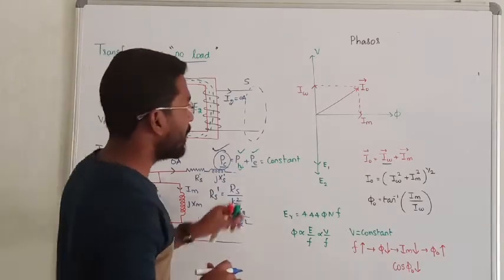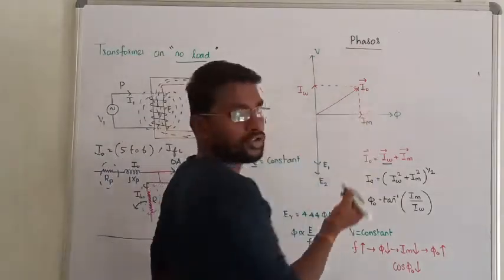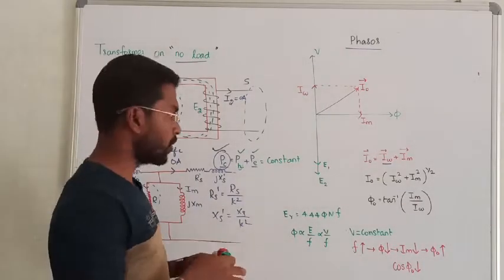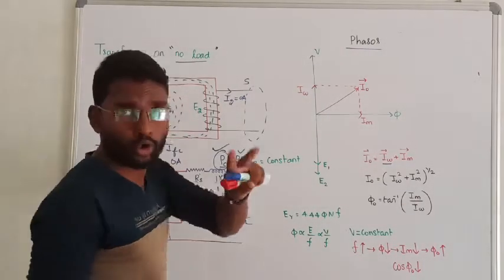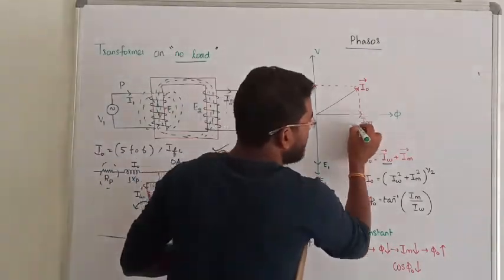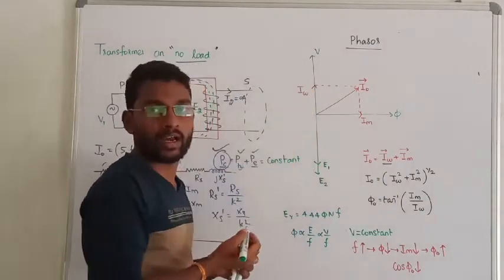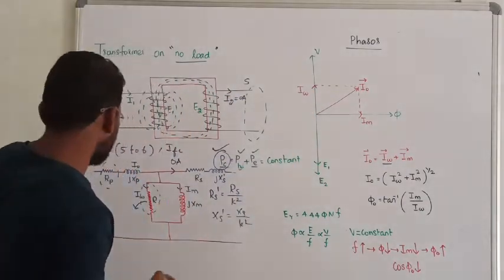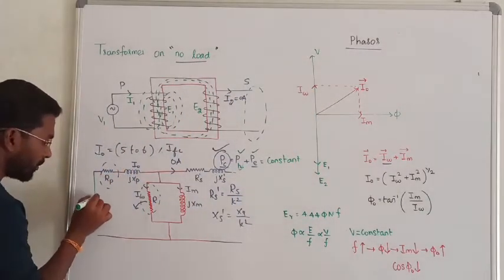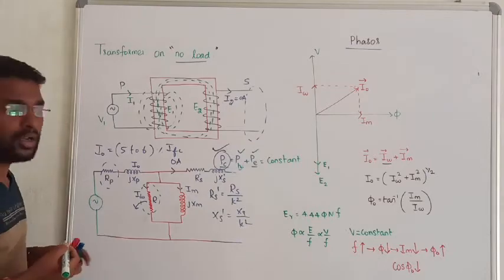Now let us see the phasor diagram of the transformer under no load. There are two currents: one is called magnetizing current and another one is called winding current. We have a supply voltage going into the primary side of the equivalent circuit.